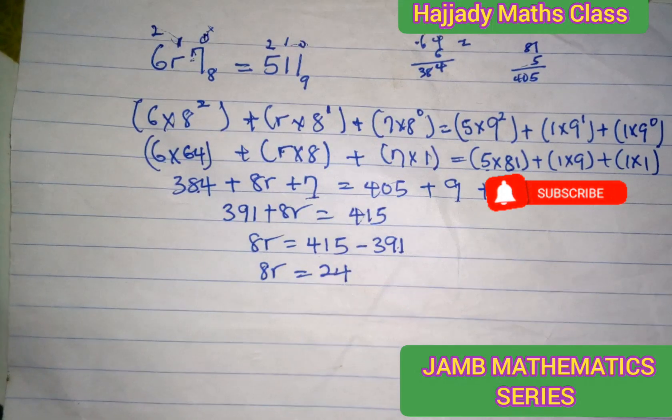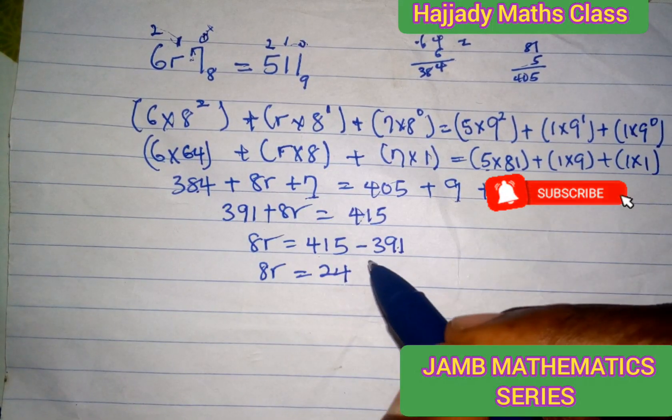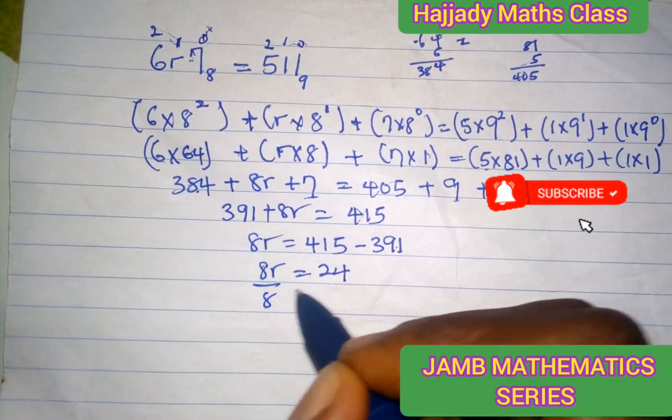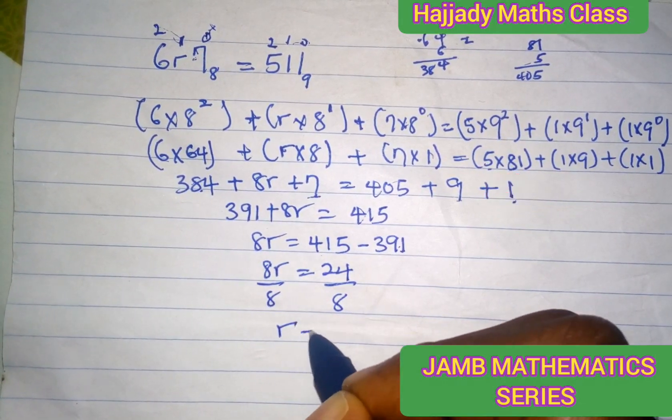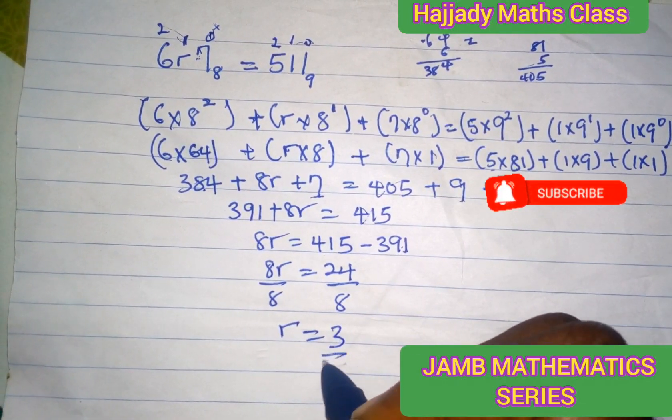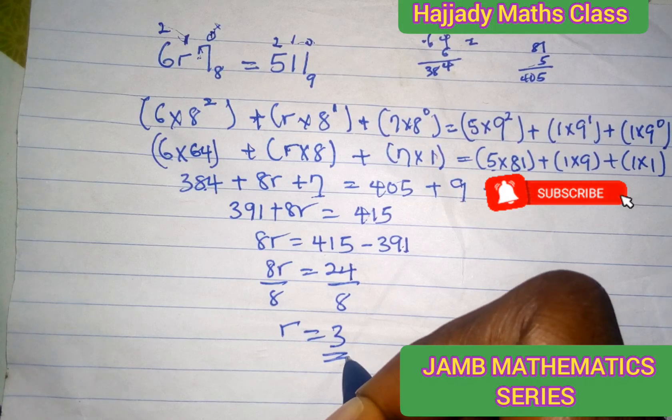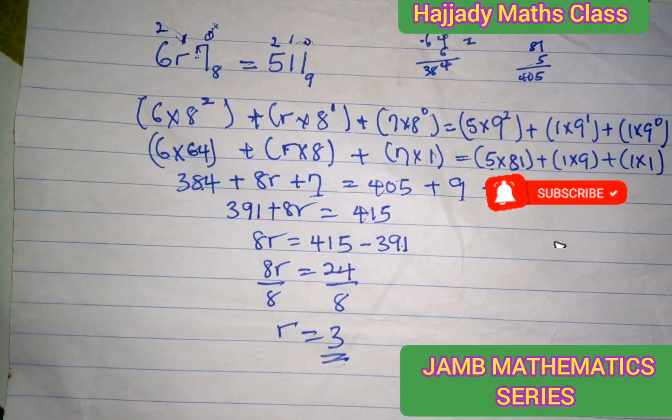Dividing both sides by the coefficient of R, which is 8, then you agree with me that R equals 3. Thank you very much and don't forget to subscribe to our channel. See you next video. Thank you.